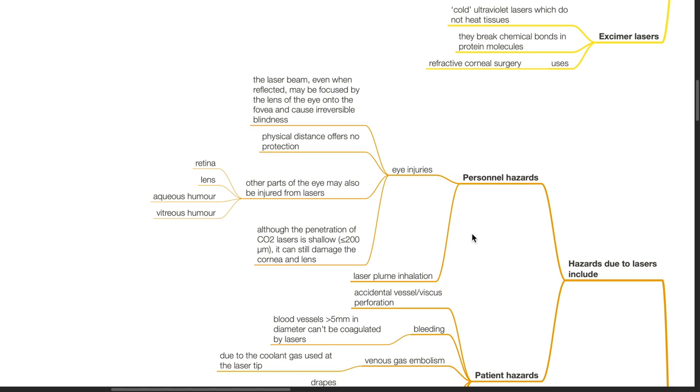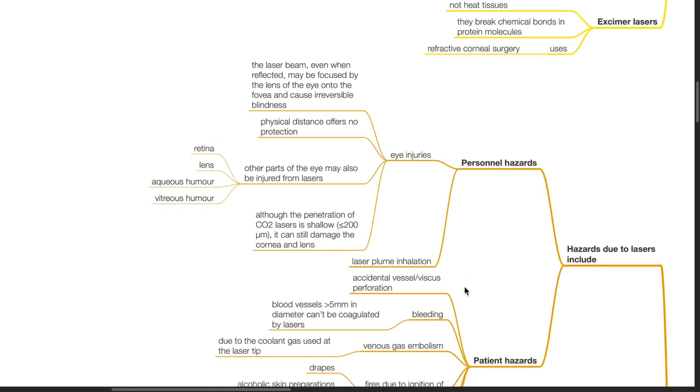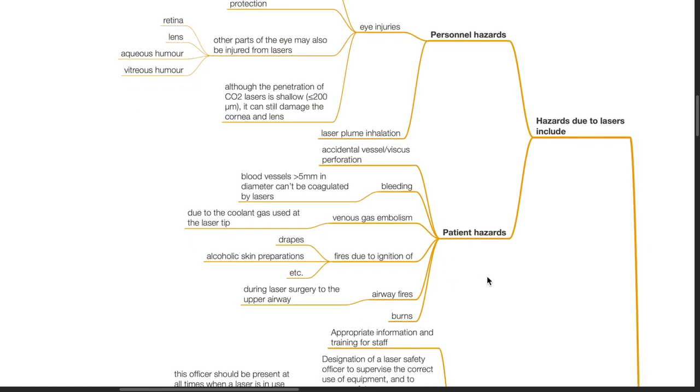Laser plume inhalation can damage the respiratory system. Patient hazards includes accidental vessel or viscous perforation, bleeding. Blood vessels more than 5 mm in diameter cannot be coagulated by lasers. Venous gas embolism due to the coolant gas used at the laser tip. Fires can occur due to ignition of drapes, alcoholic skin preparations, etc. Airway fires can occur during lasers to the airway. Burns can occur.